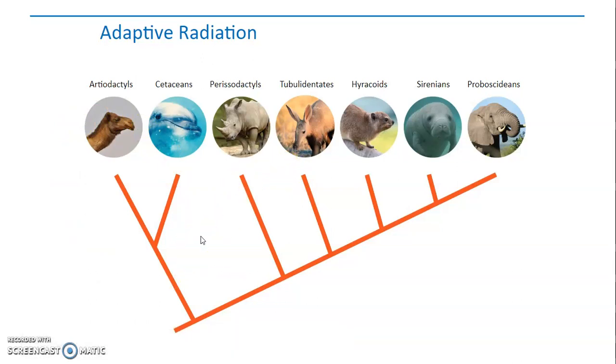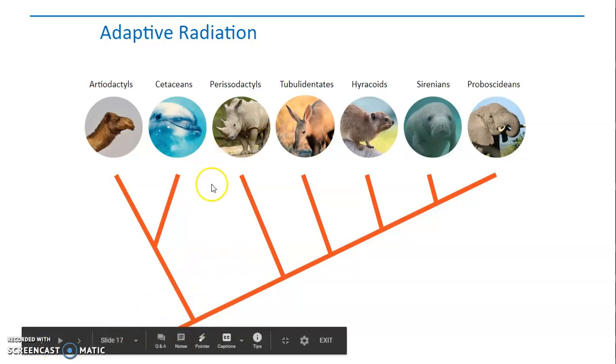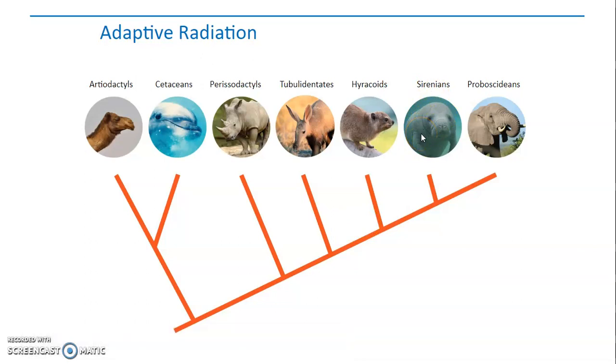So for example, dinosaurs in the Cretaceous underwent adaptive radiation and created all the different types of dinosaurs that were found on our planet. When the dinosaurs went extinct, the mammals then underwent adaptive radiation and were able to evolve into all these different, many wonderful different types of mammals that are found on our planet.